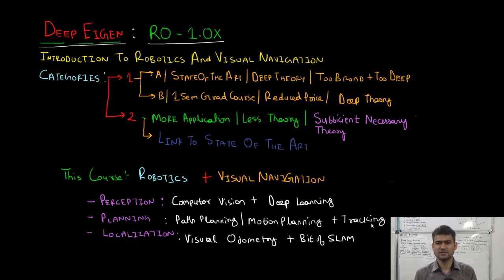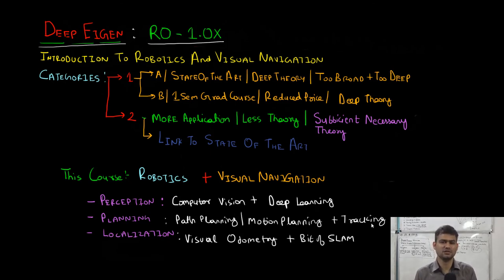Next we will discuss each of these pipelines very briefly, giving you a high level idea of the functionalities of perception, planning, and localization algorithms in a typical robotic system or an autonomous driving vehicle.